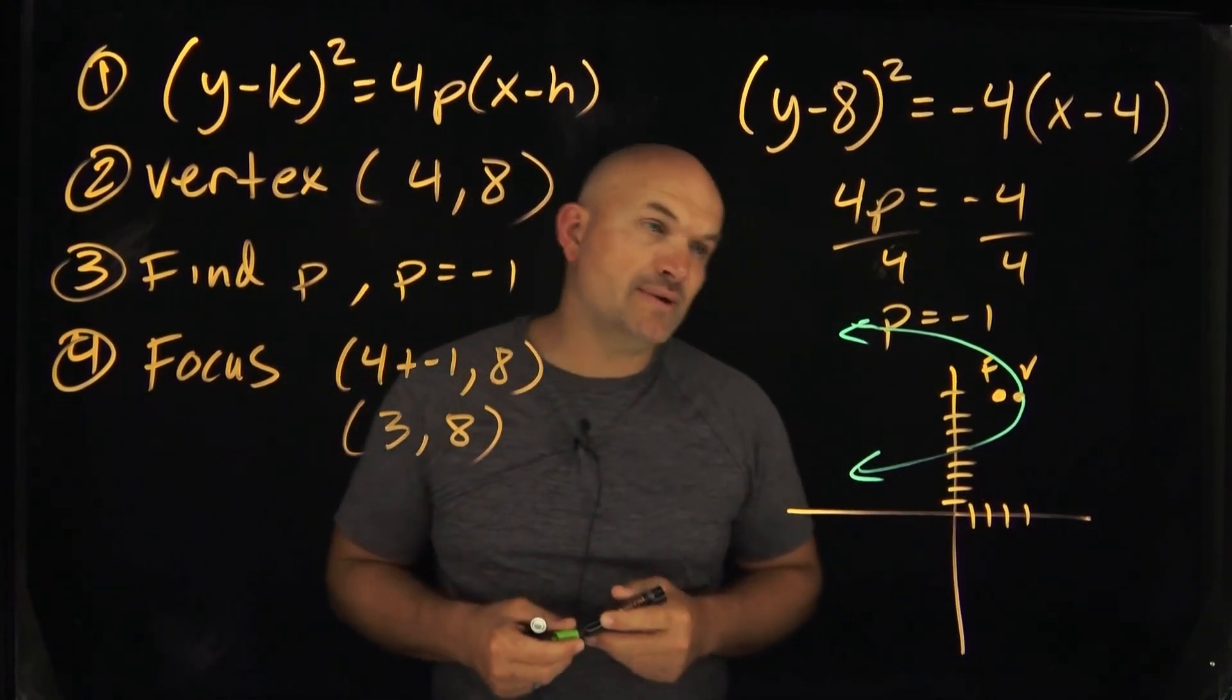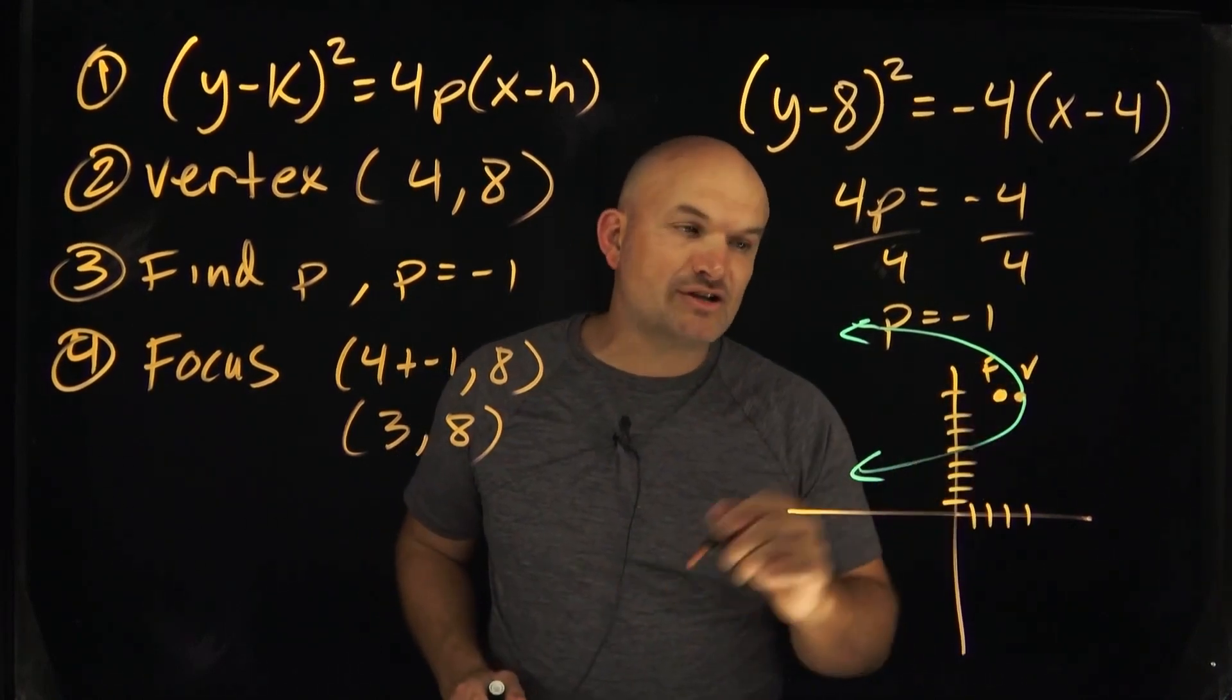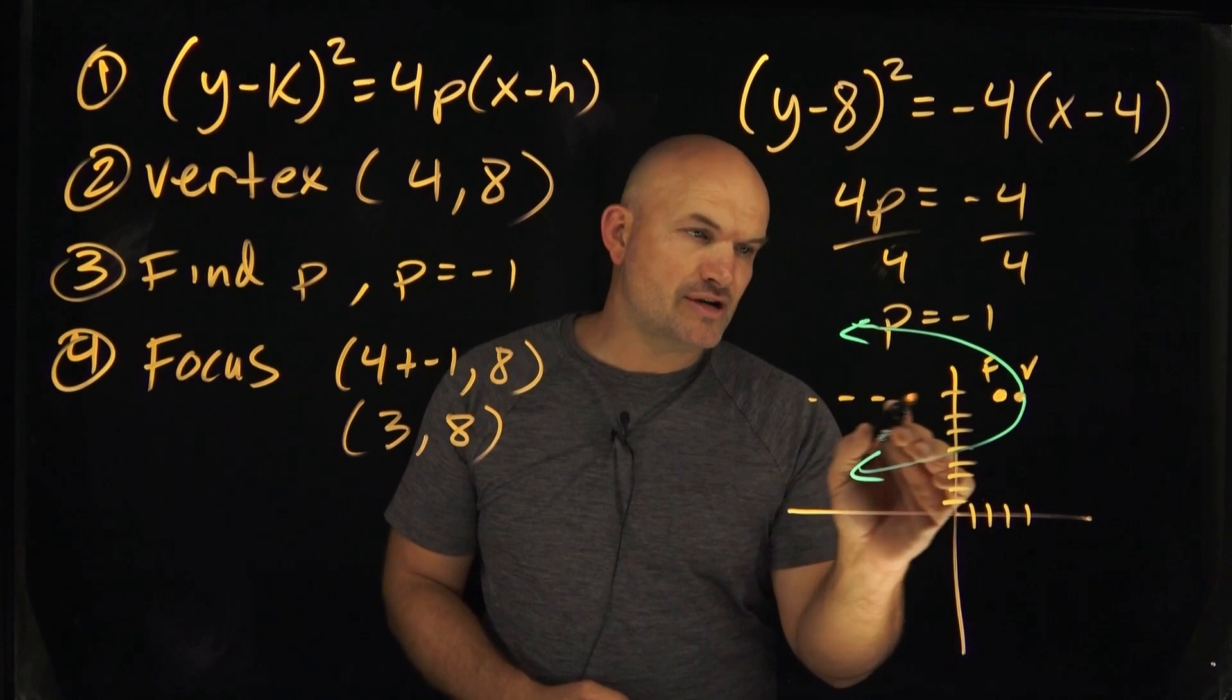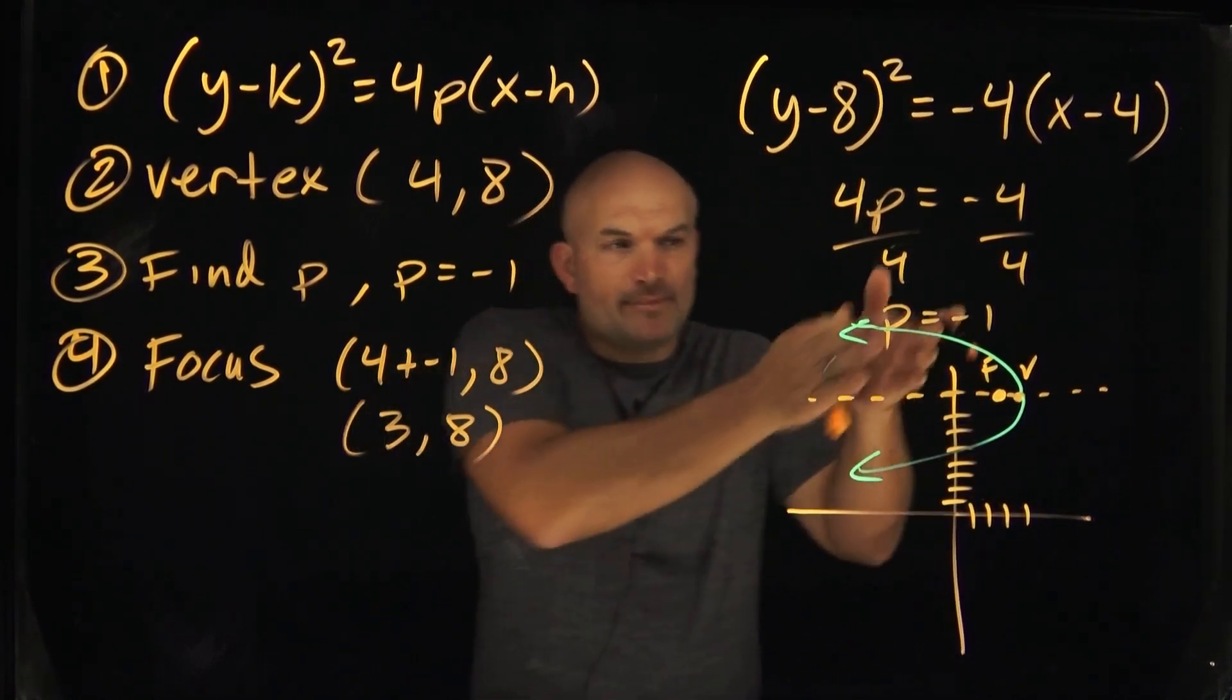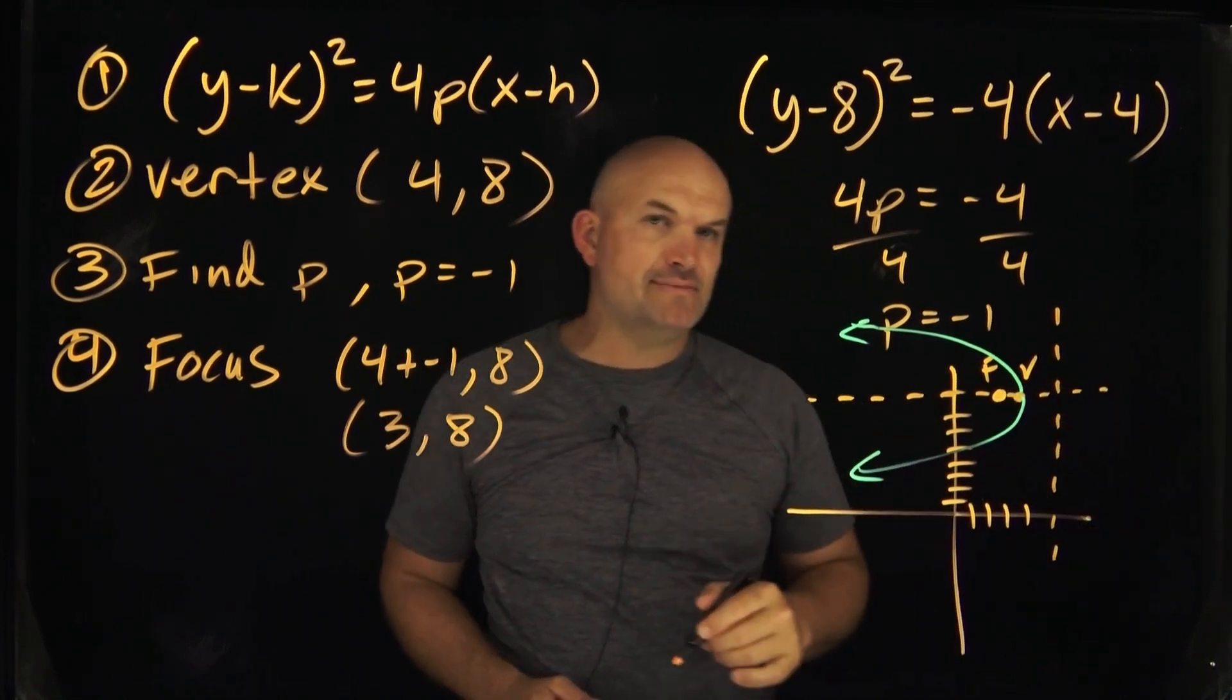Okay, and now the next thing we're going to do is be able to identify our directrix. So just important here to remember that the directrix is always going to be perpendicular to the axis of symmetry. Remember the axis of symmetry goes through your vertex here? Well the directrix has the same distance from your vertex to your focus, but it's going to be perpendicular to your axis of symmetry.